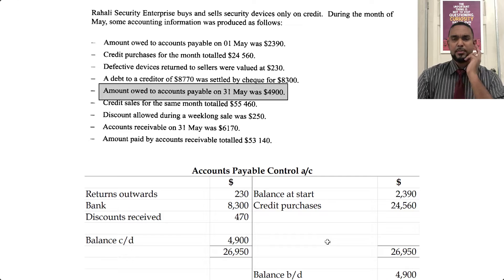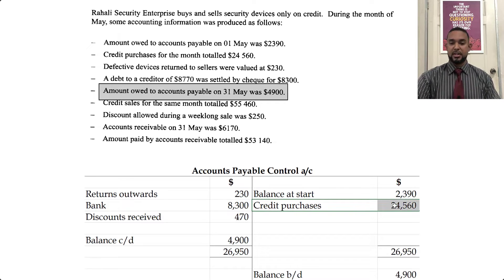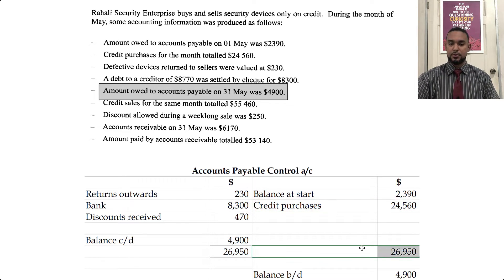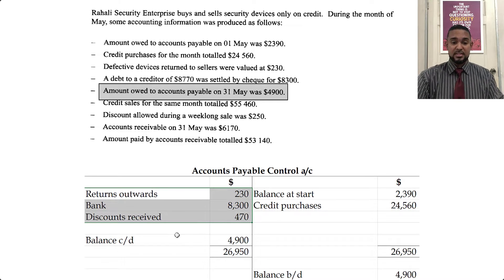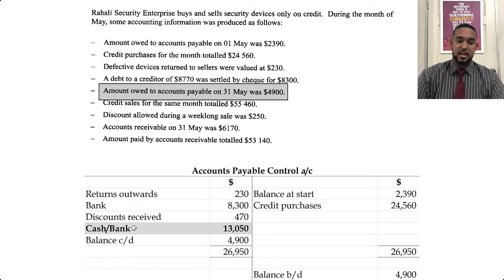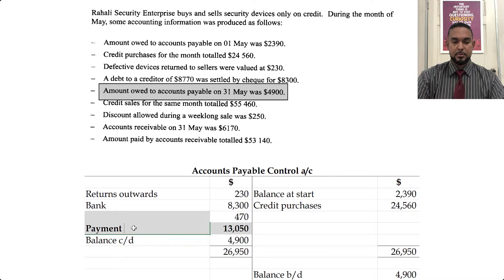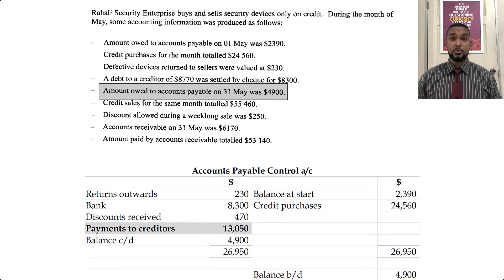The missing figure — what could it be? Looking at the account for context: we started off owing about 2,400, bought an extra 25,000 more, so we owe about 27,000. But we only paid off or reduced about 9,000. So where's the rest? That has to be more money we paid to them — so it must be missing some payments to creditors. The missing figure I have as cash/bank, but you can also put 'payments to creditors' if you prefer. So that's the accounts payable control account.